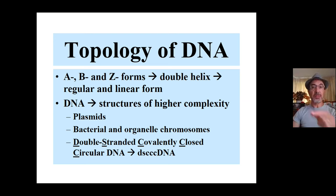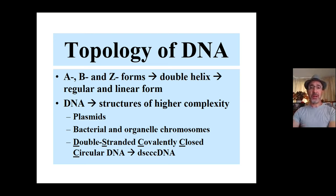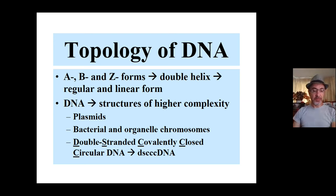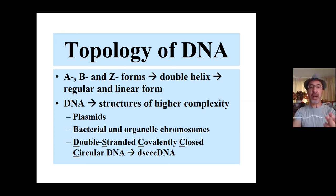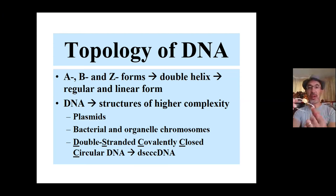All of them are simply variations of the basic theme, which is the double helix — they are regular, with linear form. In this case, the topology of these molecules, when they are linear, can be predicted quickly depending on the features they have. However, DNA molecules can adopt structures of higher complexity when they are closed — like the circular molecule you have seen previously.